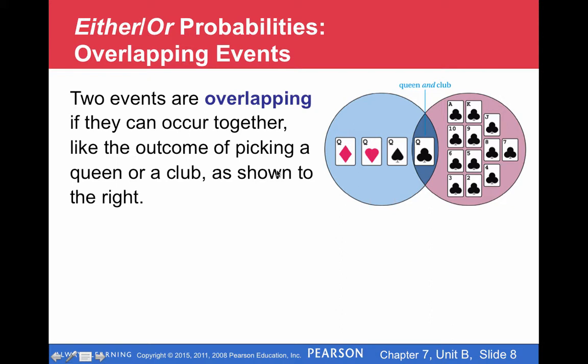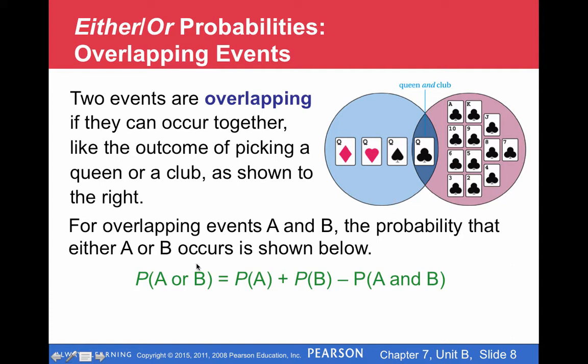A lot of events are actually overlapping, like when we have decks of cards. Don't forget to look at the sample space sheet provided in D2L — it shows all the numbers of the cards and all the suits. Two events are overlapping if they can occur together, like picking a queen or a club. There are four queens, one of which is also a queen and a club, and then there are twelve other clubs. So this does have overlap. Whenever we have overlap, we add their probabilities, but if we count the four queens and then the thirteen clubs, we've counted the queen of clubs twice. So we need to subtract off the overlap so that we only count it once.